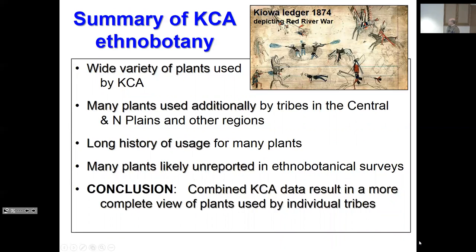Summarizing the botany in an ethnographic context: there's a wide variety of plants used. The KCA are a lot more than just monolithic bison hunters. Many of the plants are used by other tribes — so there was a lot of communication and shared knowledge, which has good survival value and makes perfect sociological sense. There's a long history of usage for many of these plants — thousands of years — with groups in the region even with the ebb and flow of different cultural groups. I'm proposing that the combined data, given the nature of ethnobotanical surveys, result in a much more complete view of the plants used by the individual tribes and is probably a more accurate reflection of their collective knowledge base of plant resources.